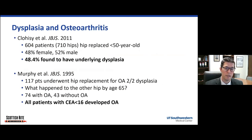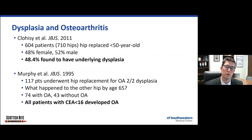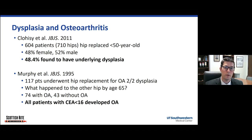Subsequent more recent studies have looked at this from a slightly different angle. Cloisi's group out of St. Louis looked at a little over 600 patients who had an early hip replacement before age 50 — that's what we worry about with dysplasia, that you'll get early degeneration, early osteoarthritis, and have a hip replacement at a young age. What they found when they looked at all those patients is that about half of them had underlying hip dysplasia thought to be the cause of their arthritis.